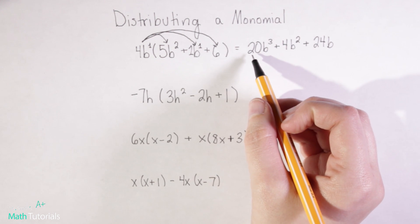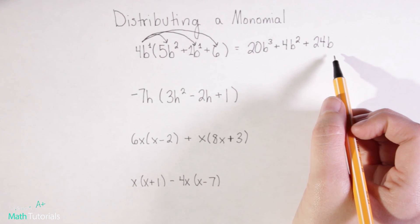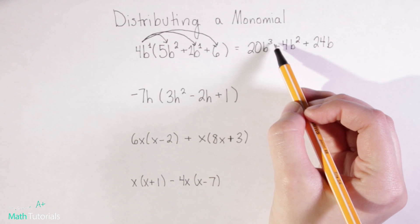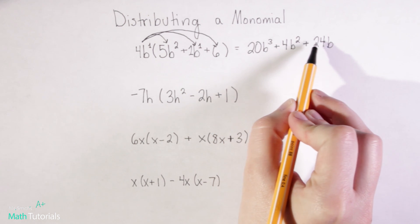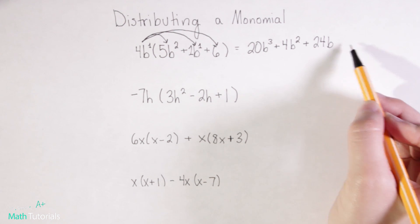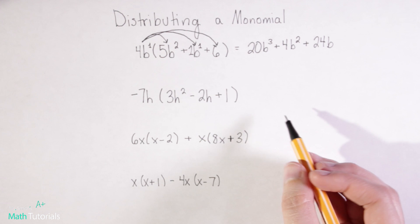So I would want to double check and make sure I've written my answer in standard form. We talked about standard form in the last video where we want to make sure we have the highest exponent first and then in descending order from there. If we had ended up with a constant we would want to have that at the end, but we didn't here. So let's move on to our second example.